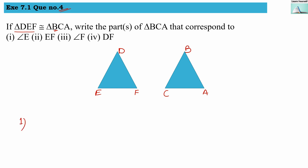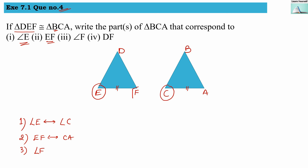Now let us find all corresponding congruent parts. First, angle E — the corresponding angle is angle C, so angle E is congruent with angle C. Second, side EF — the corresponding side is CA, so EF corresponds to CA. Third, angle F — the corresponding angle is angle A, so angle F is congruent with angle A. Fourth, side DF — the corresponding side is BA, so segment DF corresponds to segment BA.